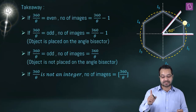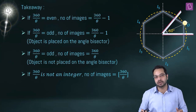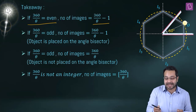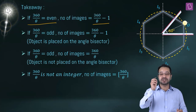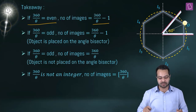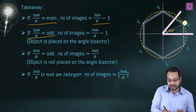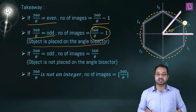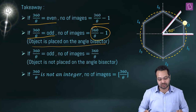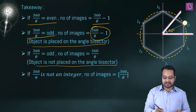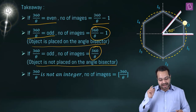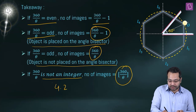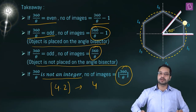The key takeaway is the full set of formulae. If N is even, the number of images is N − 1, regardless of whether the object is on the angular bisector. When N is odd and the object is on the angular bisector, images = N − 1 because two images overlap. When not on the bisector, images = N. If N is not an integer, use the greatest integer function — for example, N = 4.2 gives 4 images.